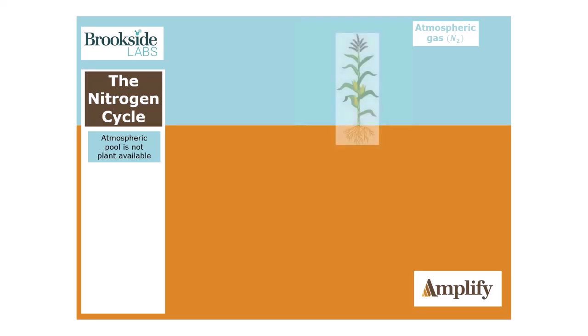Now, that is sort of a cruel joke because it's completely unavailable to the corn plant. So you've got 40 acres of corn, 2.8 billion pounds of nitrogen floating around it — water everywhere, not a drop to drink — because that corn can't use any of it.